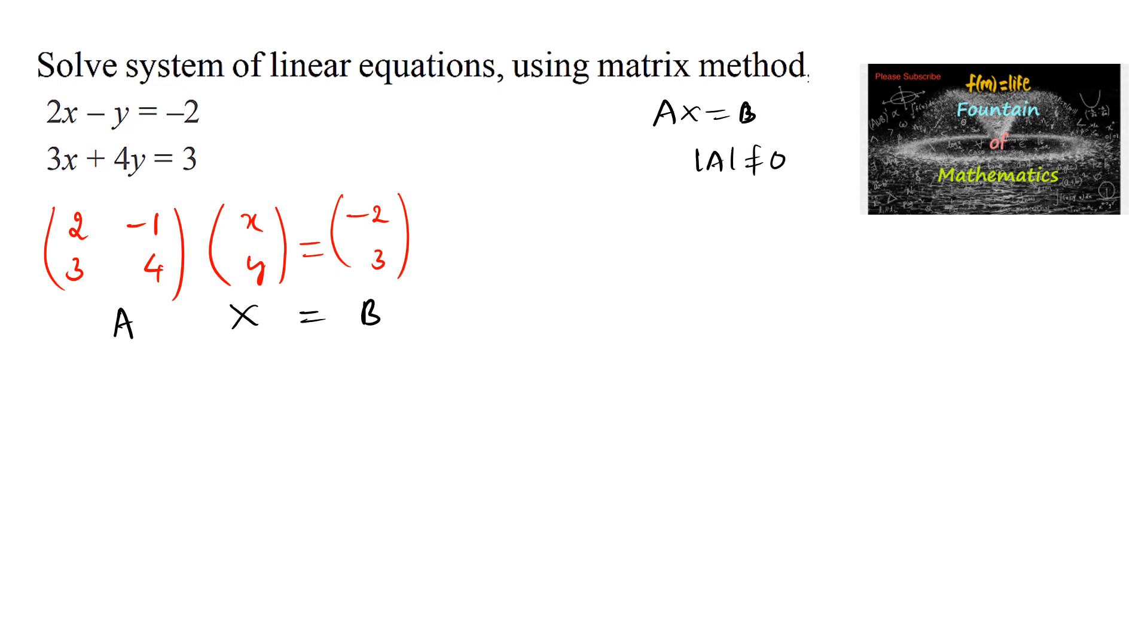First, the determinant of A should not be equal to 0 to get the unique solution. We have x is equal to A inverse into B, where A inverse is equal to 1 by delta A into adjoint of the matrix A.